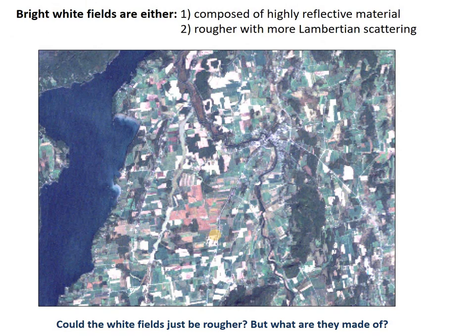Back to our farm fields — we're trying to understand why some of these fields are so bright and saturated in our image. We now have two possibilities: one is that they're just more reflective in general, maybe their narrow band reflection is very high like snow or a mirror material. Or the second option is that they're just rougher and have better Lambertian scattering than the other fields. Stay tuned for our next video on band ratios where we're going to answer this question. Thanks!